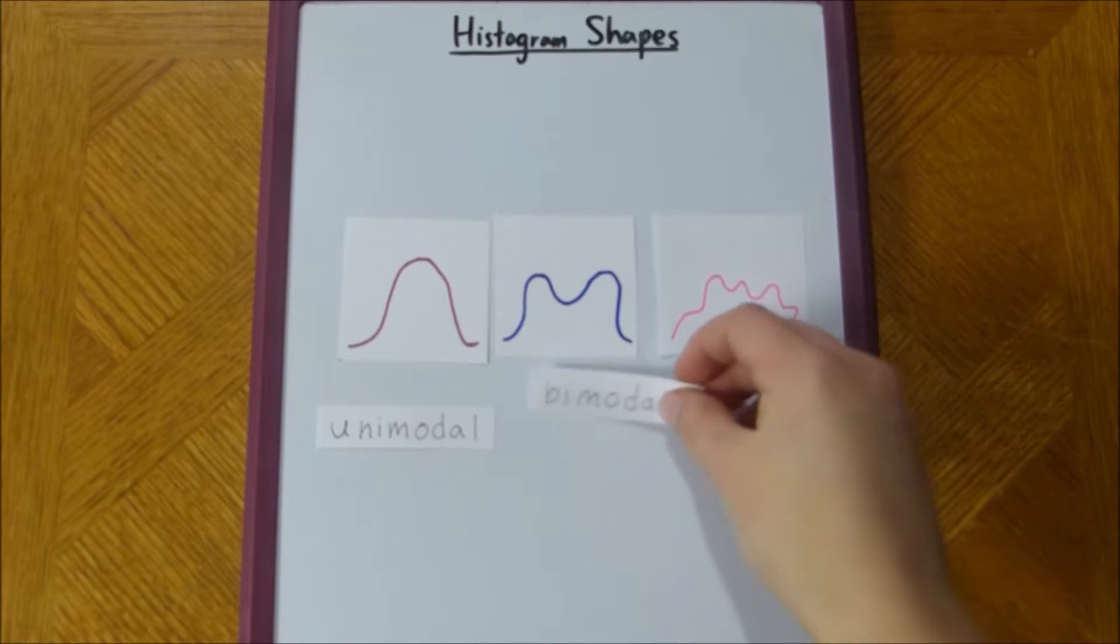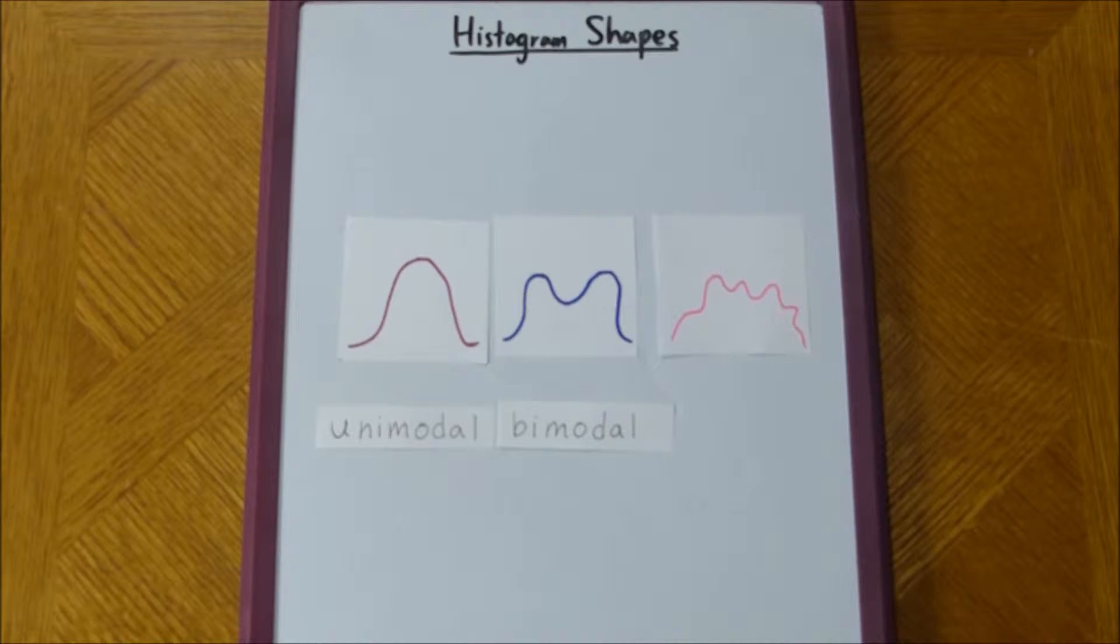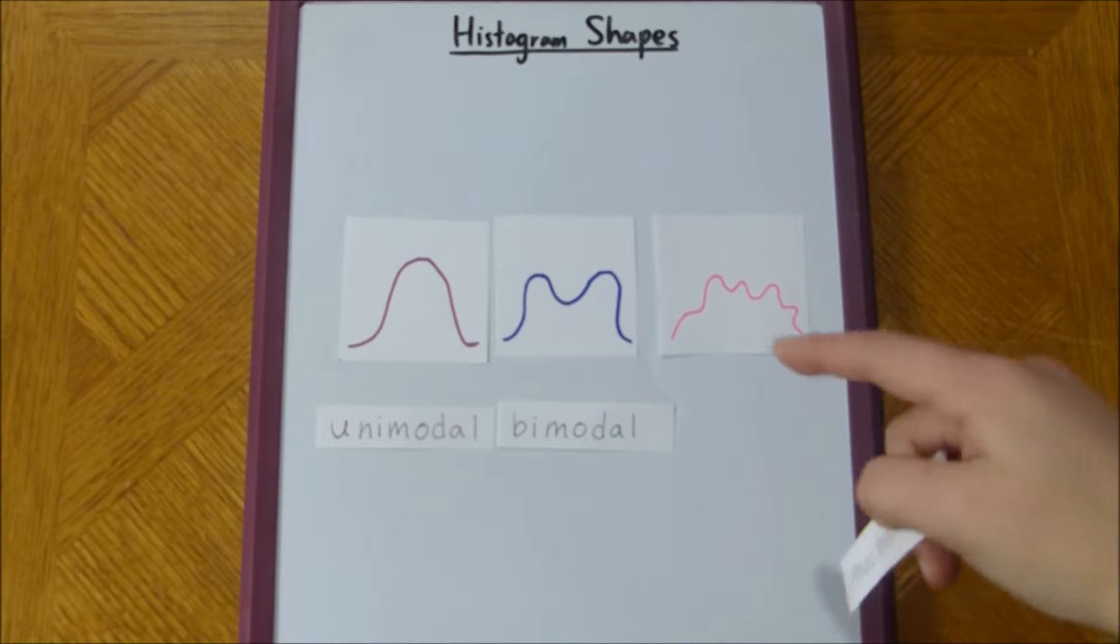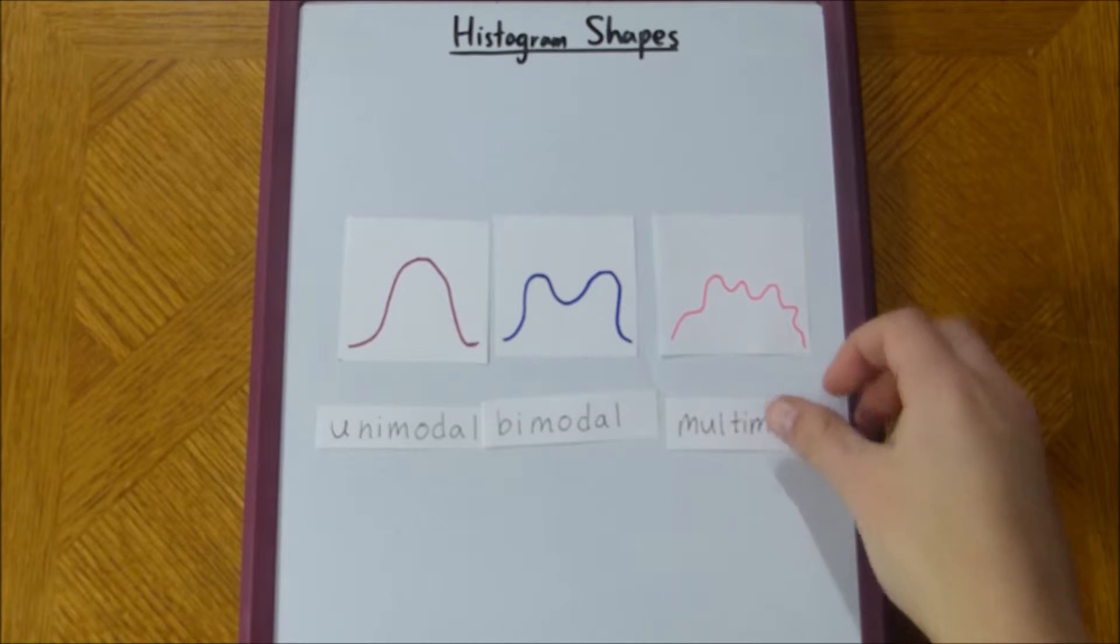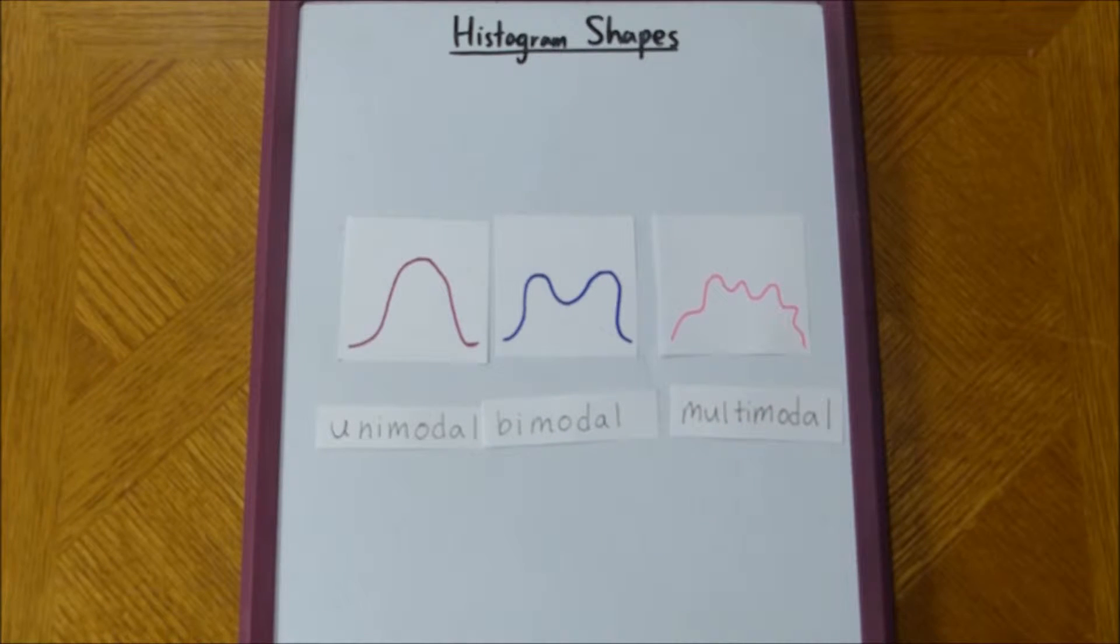We've got bimodal, two modes, also makes sense. And then for this crazy, wacky third one, we have multimodal, many modes. That's right. So, that's one way to characterize these histogram shapes.